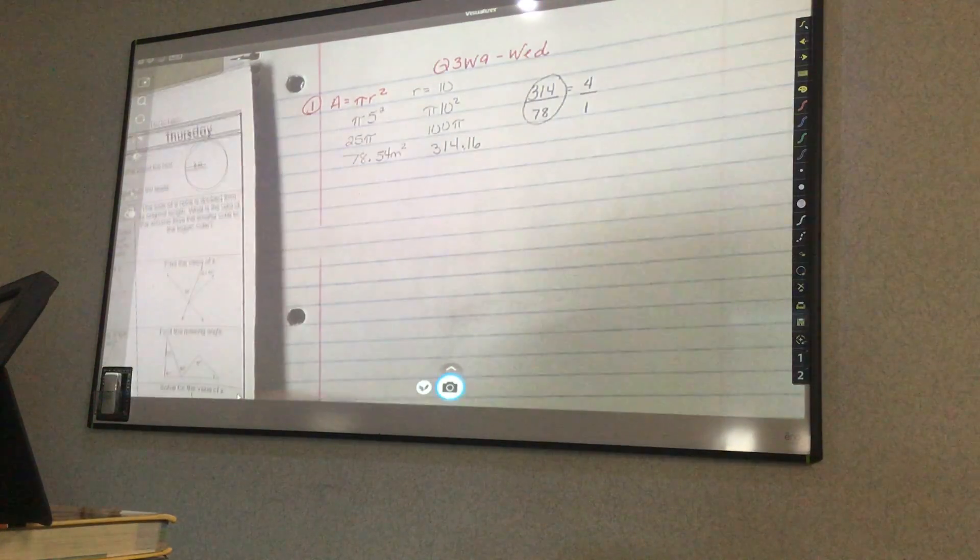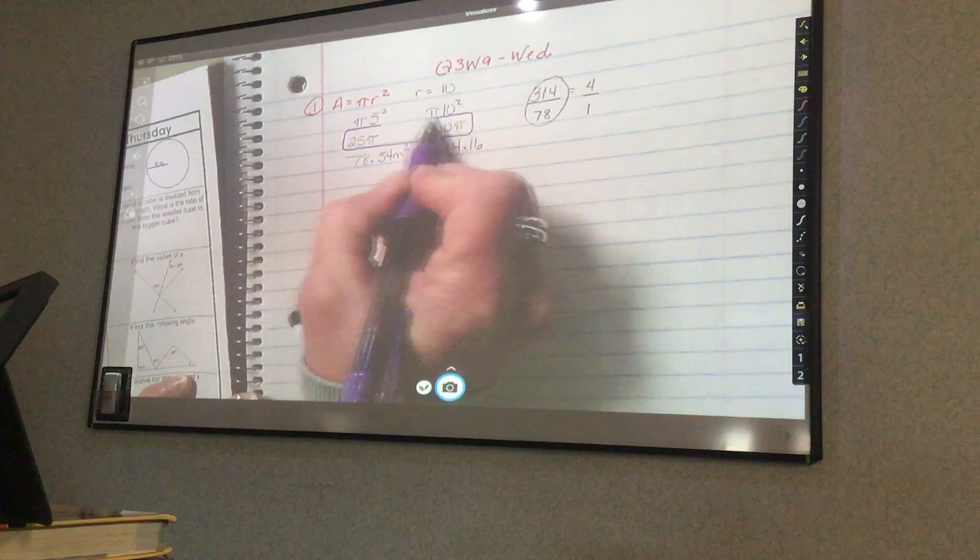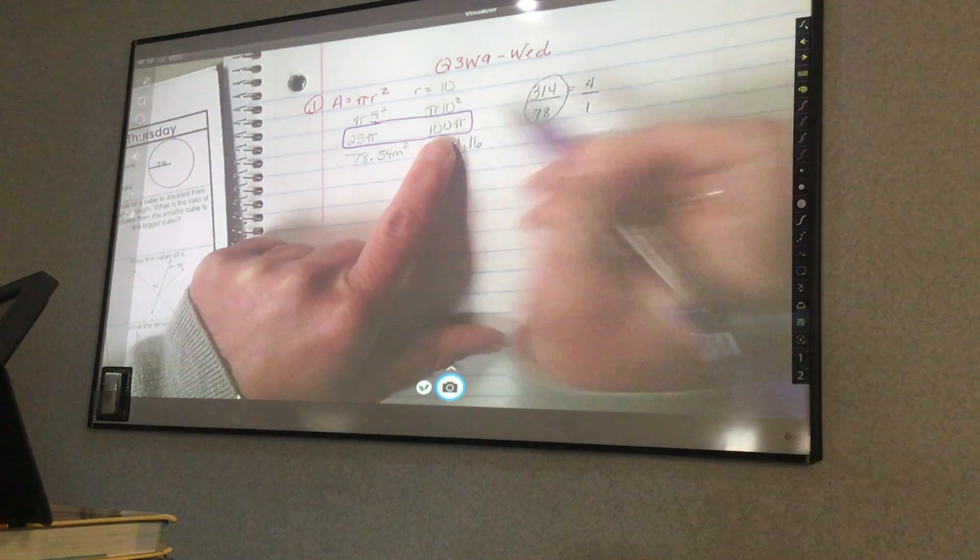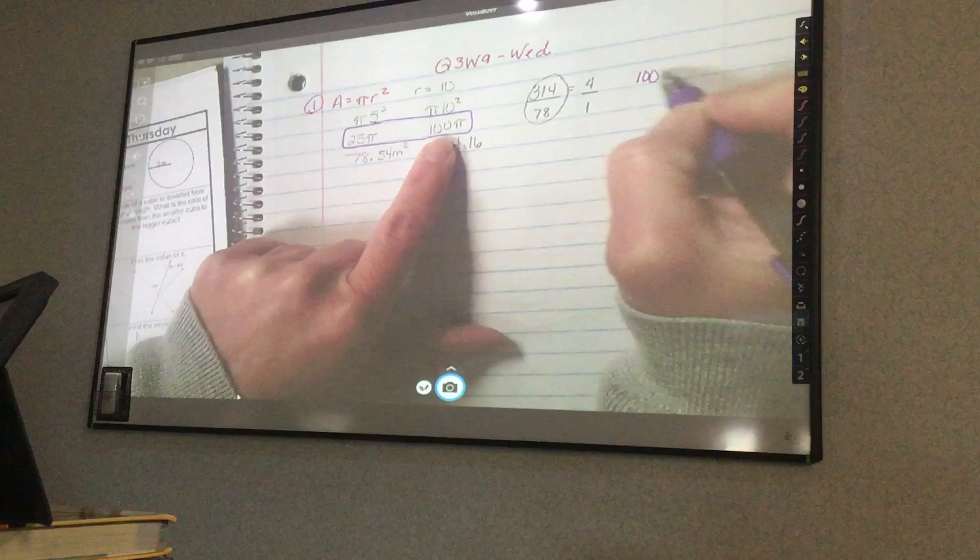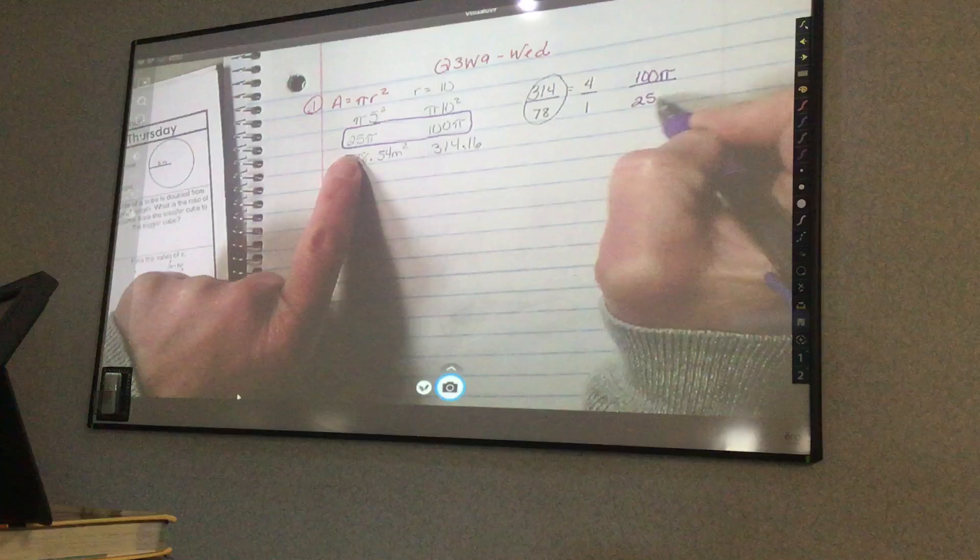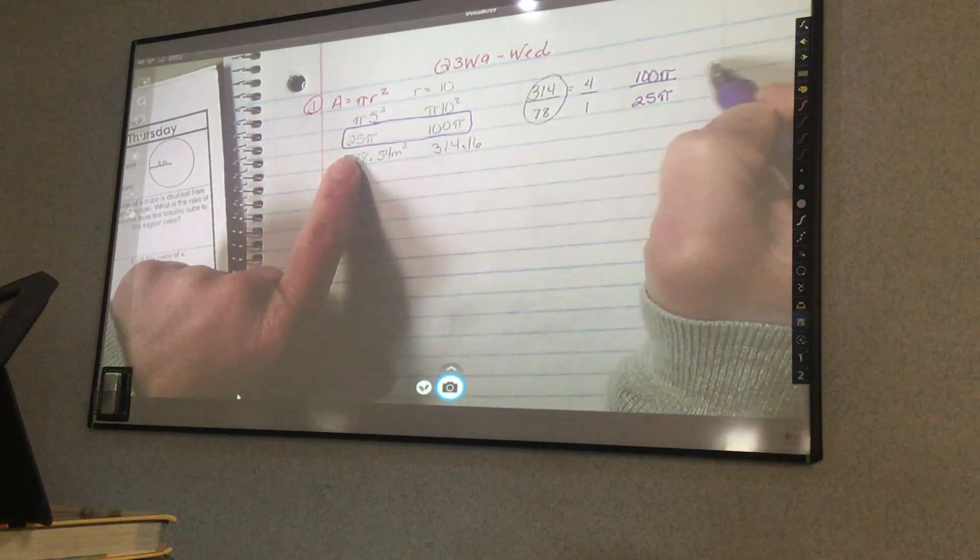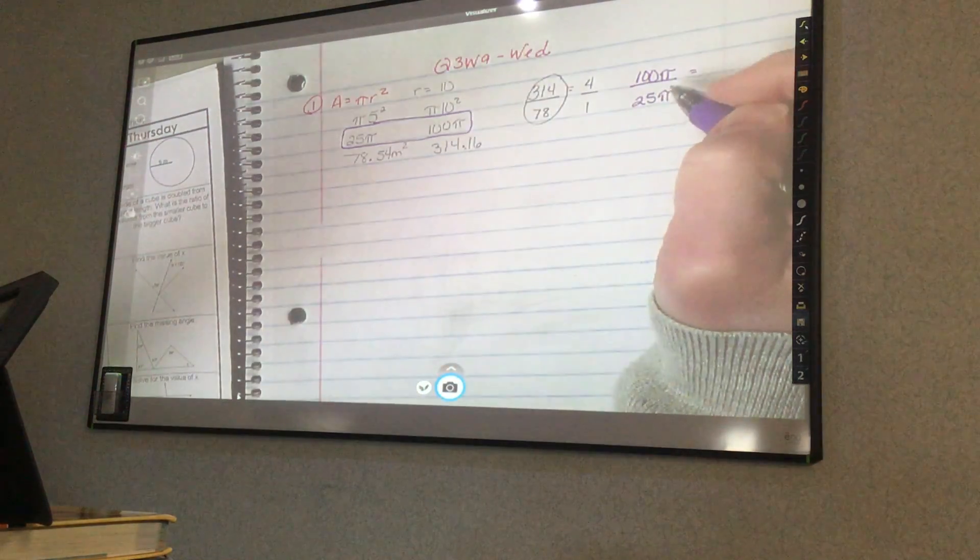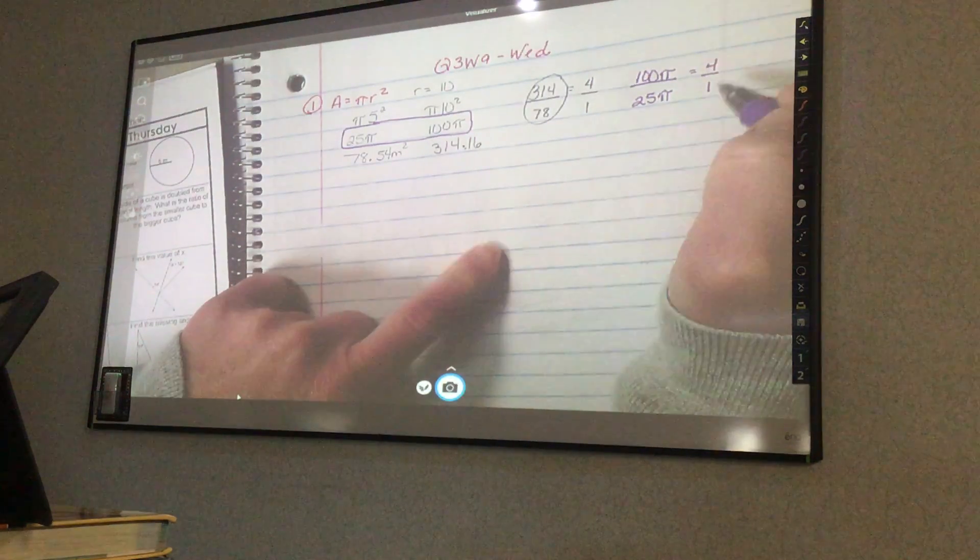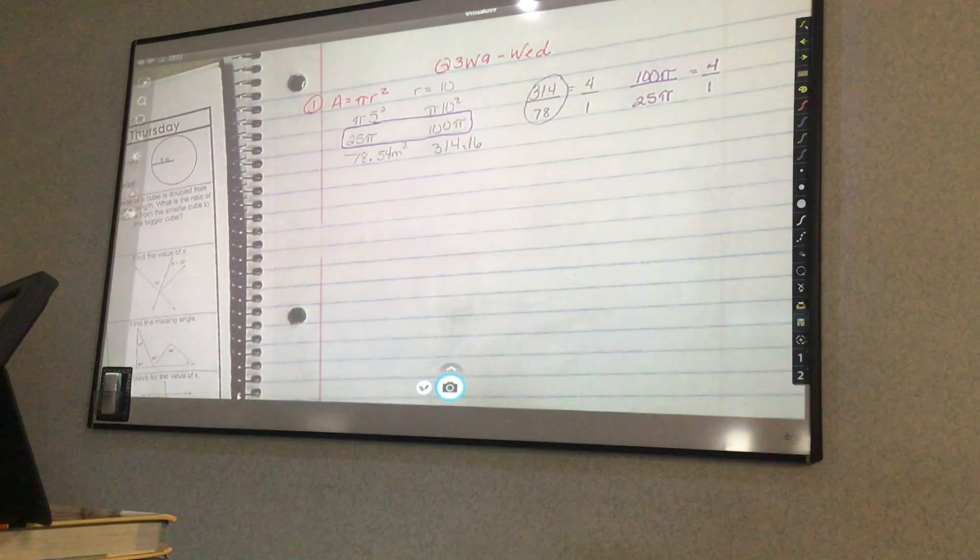This is why I wrote these this way. So now let's use this, because this is the area. So now I have 100 pi over 25 pi. Can I reduce this easily? Yes. By 25. So then I know I'd reduce by 25 pi. So then I know my ratio is 4 to 1. So sometimes leaving pi there helps you if you would need to make it into a ratio.